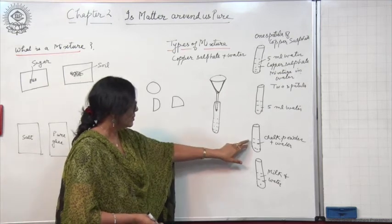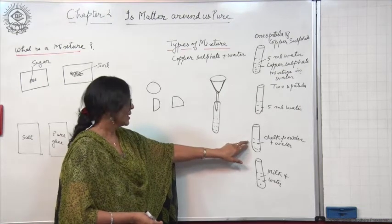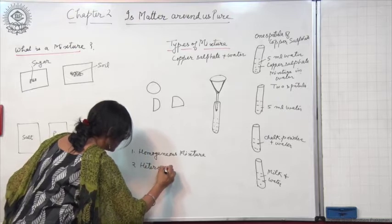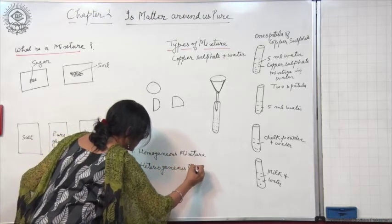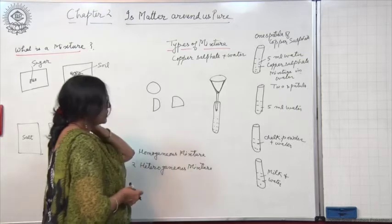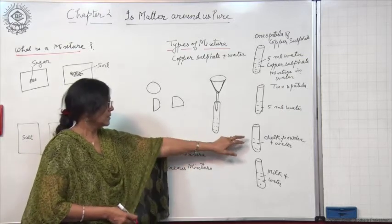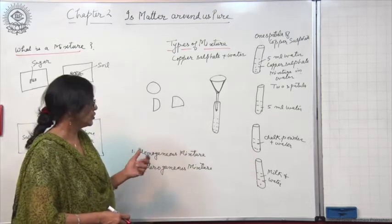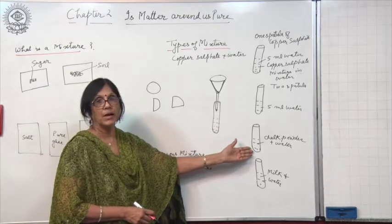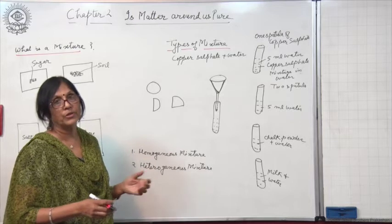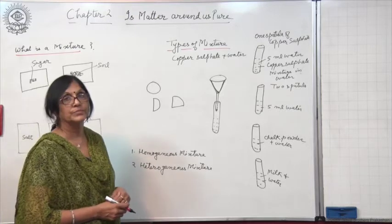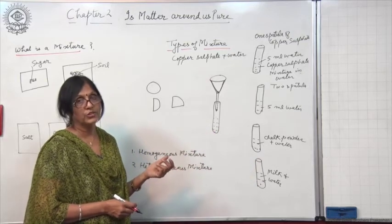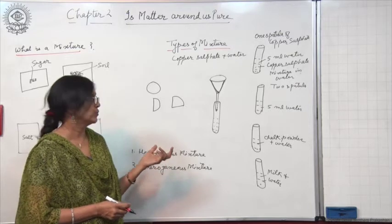So there are three types of mixtures. The first is a homogeneous mixture — copper sulphate dissolved in water. The second type is called a heterogeneous mixture, in which the composition is not uniform throughout its mass and there are visible boundaries of separation between the constituents. If you dissolve soil in water, it also forms a heterogeneous mixture.